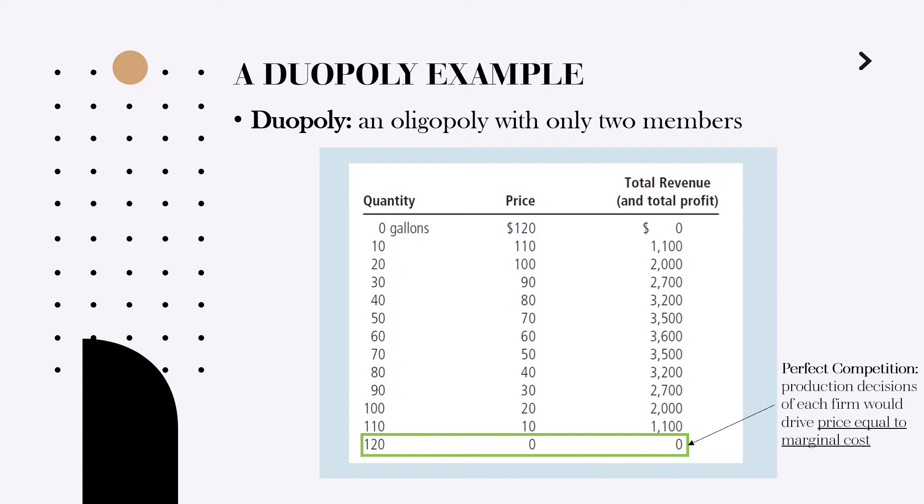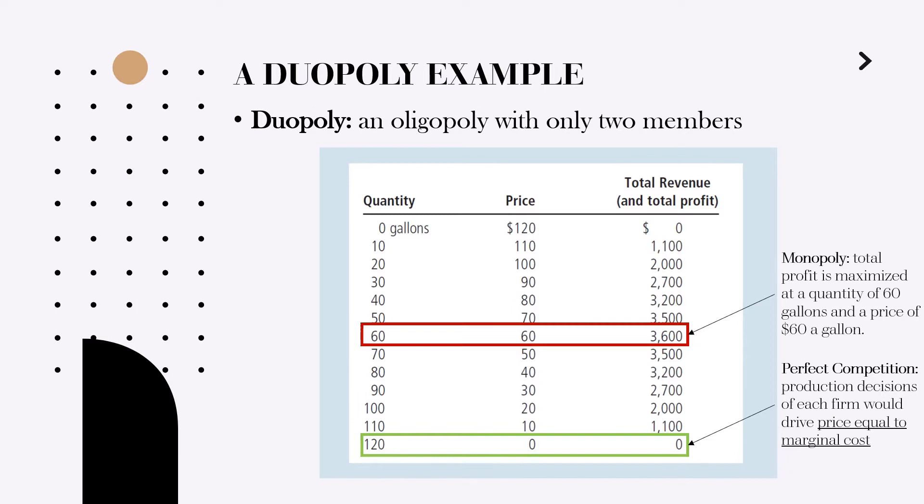Now let us also understand what will happen if this market was a monopoly. In the case of a monopoly, the company will try to find the profit-maximizing quantity and produce at that quantity. In our case this quantity is 60 gallons at 60 dollars per gallon. As you can see, the profit of the company is maximized at this point.